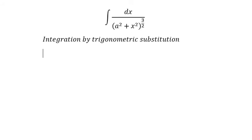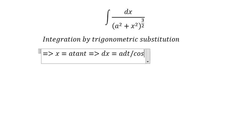So in here we have x equals a tan t, and dx equals a dt over cos² t.